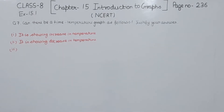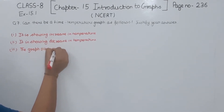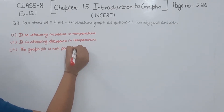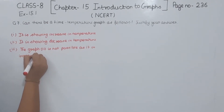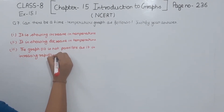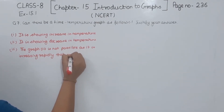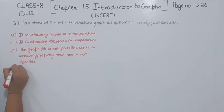Now coming to the third graph. In this one we can see that the temperature is increasing very rapidly, and this is not possible. So graph 3 is not possible, since the temperature is increasing very rapidly, which is not physically possible.